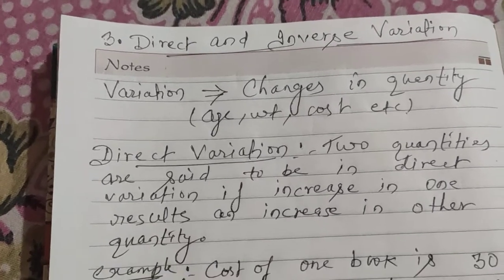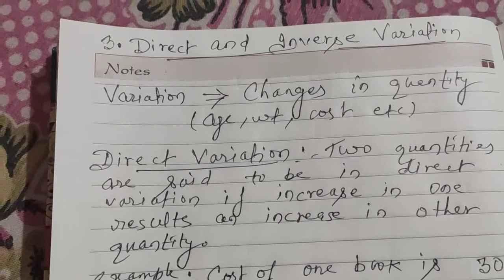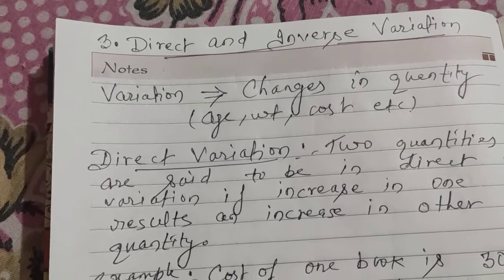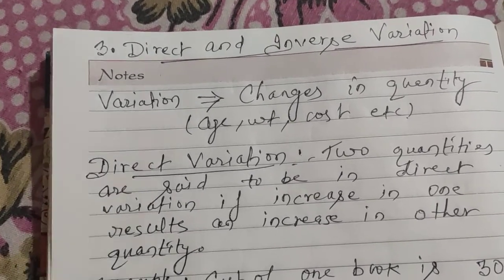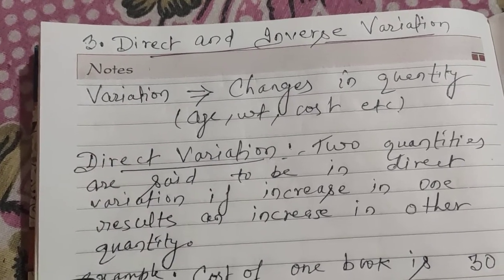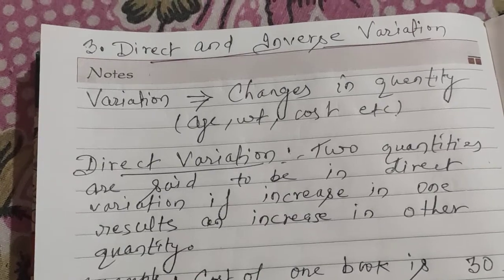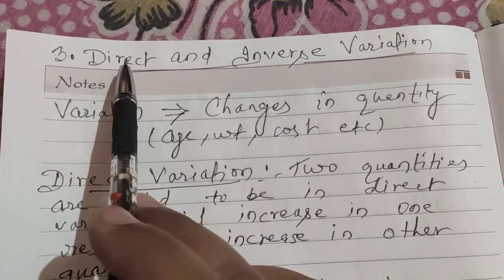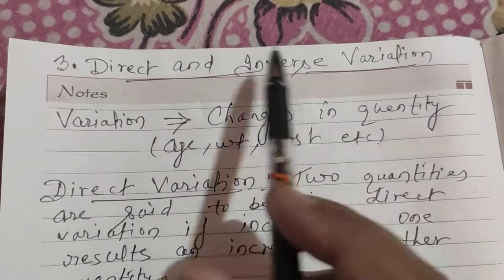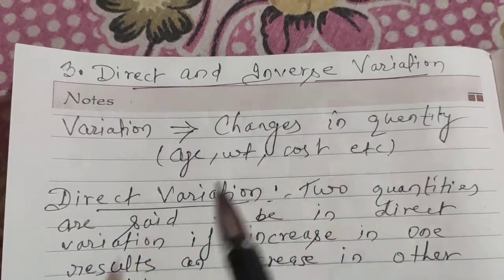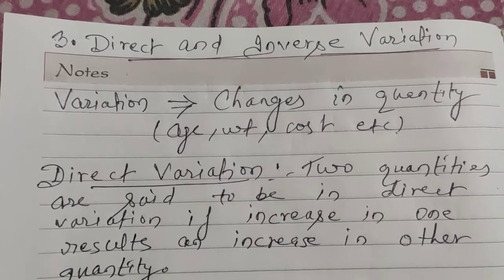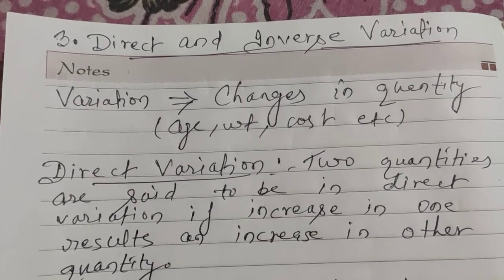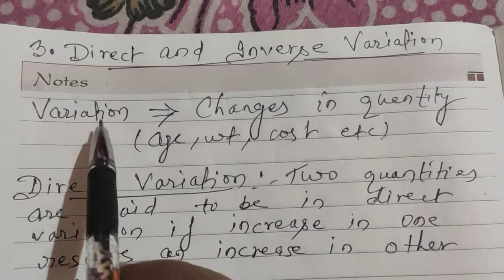Hello everyone. In previous videos we discussed two units of the syllabus — first was square and square root, second was cube and cube root. I hope the videos were useful. In the same regard, let us start the third unit that we have to learn, that is direct and inverse variation. Within this chapter we will learn different terms, and I hope you will be able to solve the problems based on variation.